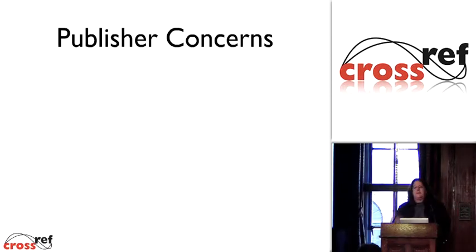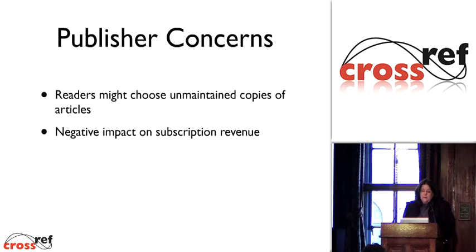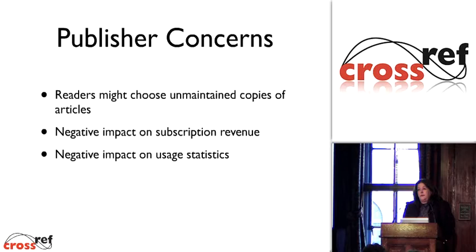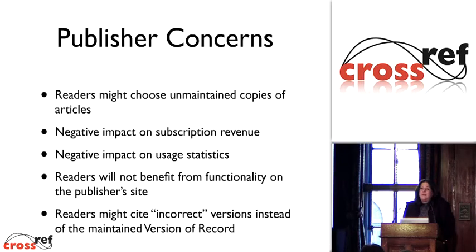So we talked to publishers about this kind of issue and asked them what their concerns are. One of their problems is that readers might choose unmaintained copies of articles. You do a search on Google, go to an author's webpage or an institutional repository — that's not the official version. That could have some negative impact on subscription revenue, or on usage statistics even if you're not subscription-based. Publishers put a lot of effort into the functionality on their site, and if readers are getting documents elsewhere, they can't take advantage of those things.